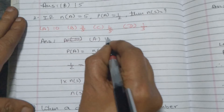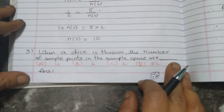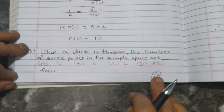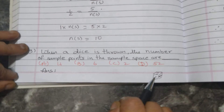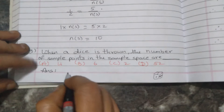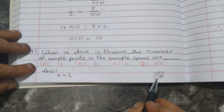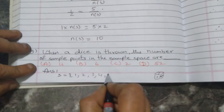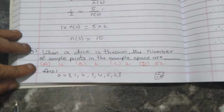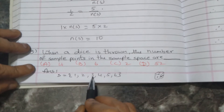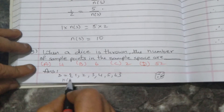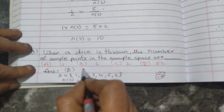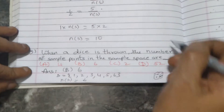You have to write: A, 10. Next — when a die is thrown, the number of sample points in the sample space are how many? A die is like a Ludo cube shape with 6 faces: 1 dot, 2 dots, 3 dots, 4 dots, 5 dots, 6 dots. So the sample points in the sample space are 6. The correct option is B, that is 6.